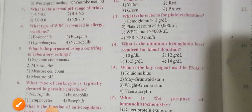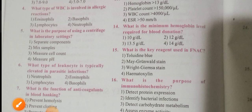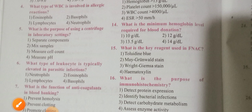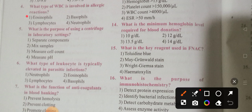Question 4: What type of WBC is involved in allergic reactions? The options are: eosinophils, basophils, lymphocytes, neutrophils. Option 1 is the correct answer — eosinophils are the WBC type involved in allergic reactions. Elevated eosinophil count is responsible for increasing allergic reactions.